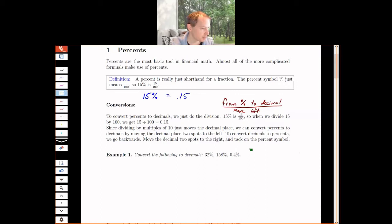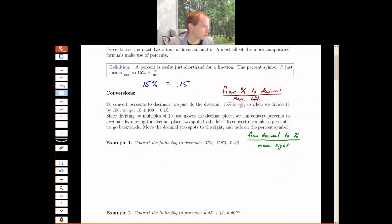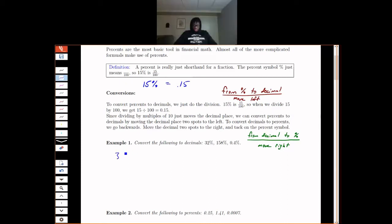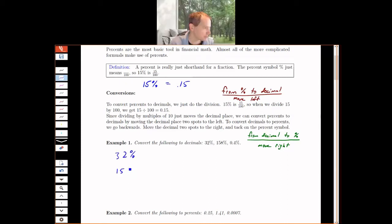If I want to convert the following to decimals, suppose I have 32 percent. This is just 32 over 100, so I move the decimal place left two places, one, two, and that gives me 0.32.